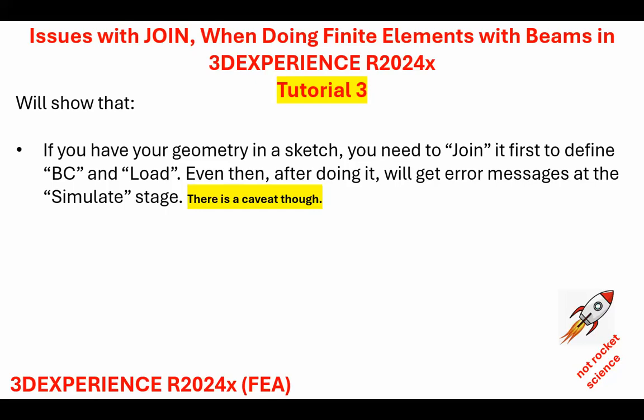One of the things you have to do after you create geometry in the sketch is join it. Because if you don't join it, you'll notice that later on when you try to simulate the result — although things may look okay — when you try to simulate it, it's going to come back with an error message saying it can't do it. I'll show you an example of how this comes about.